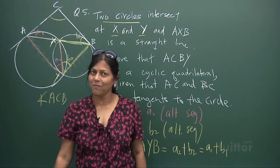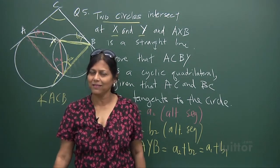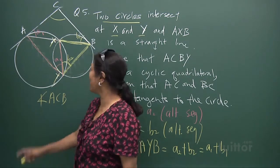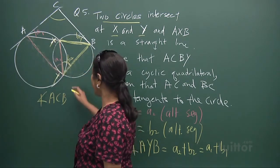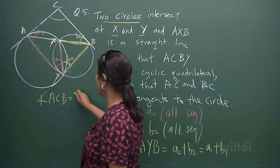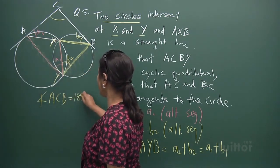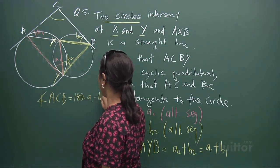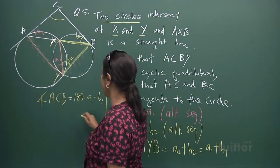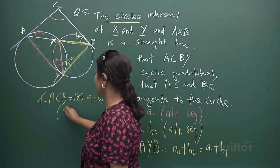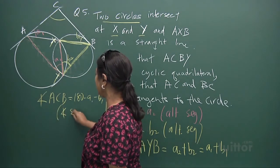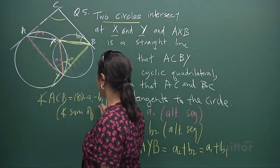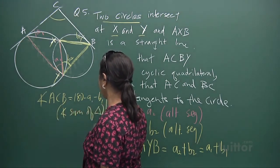Angle sum of triangle — that's really important to use. Is it angle ACB? It's 180 minus A1 minus B1. What's the reason? Angle sum of triangle.